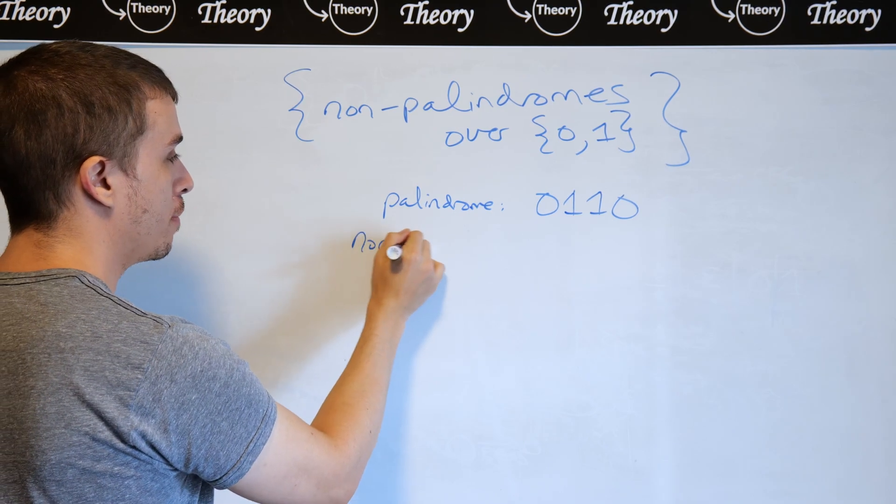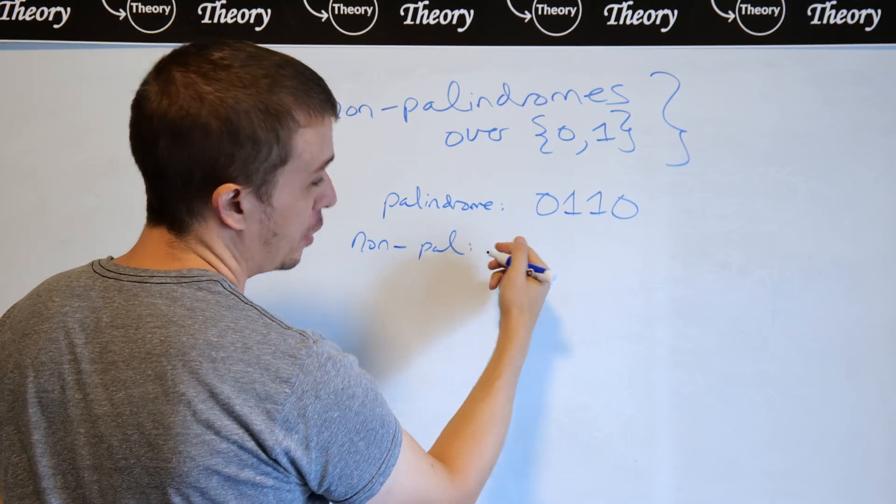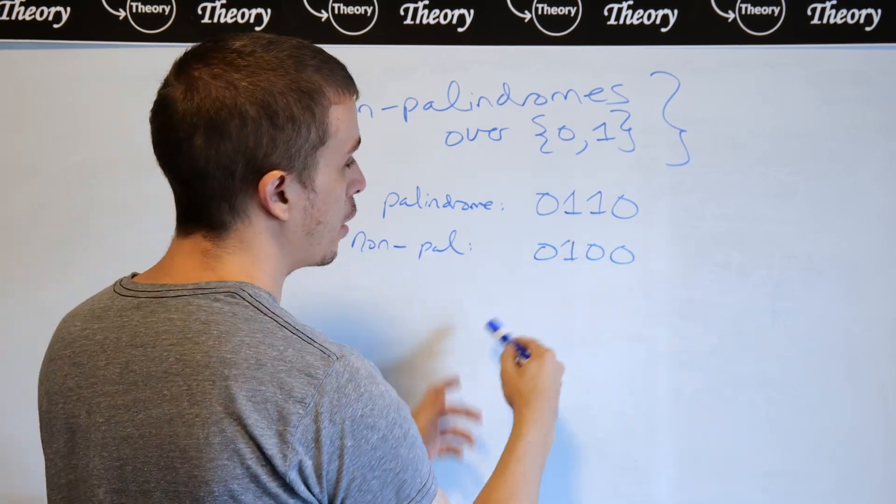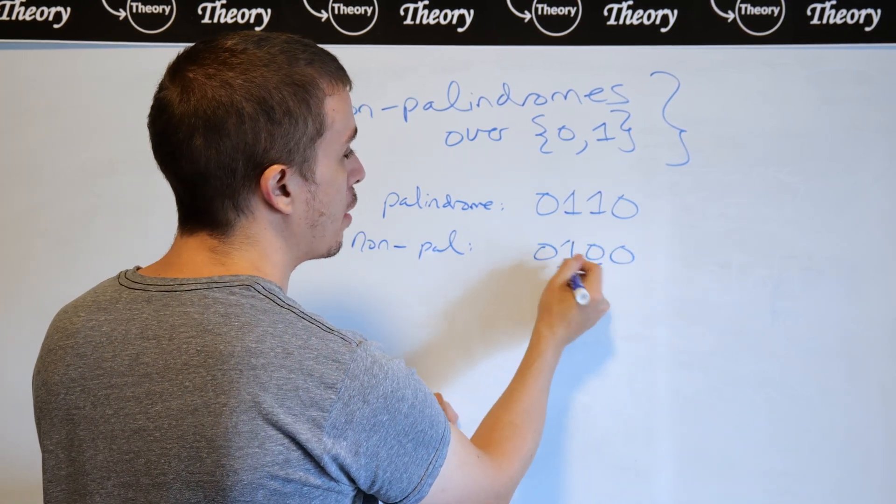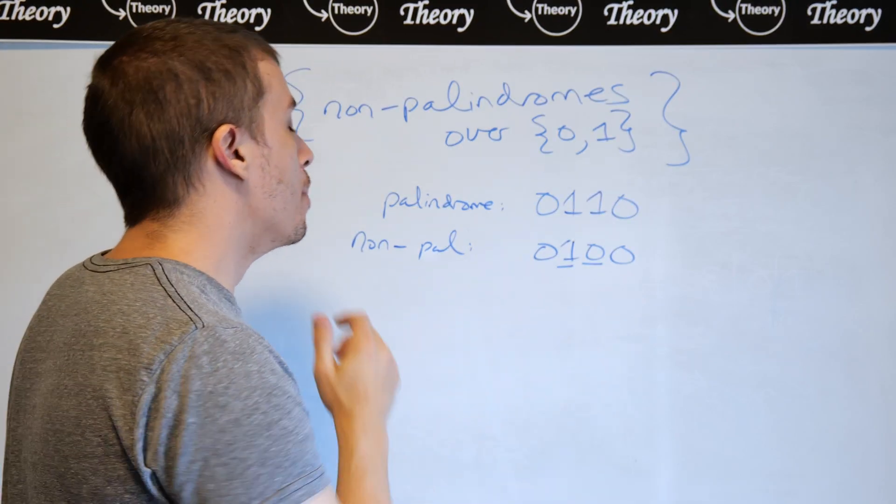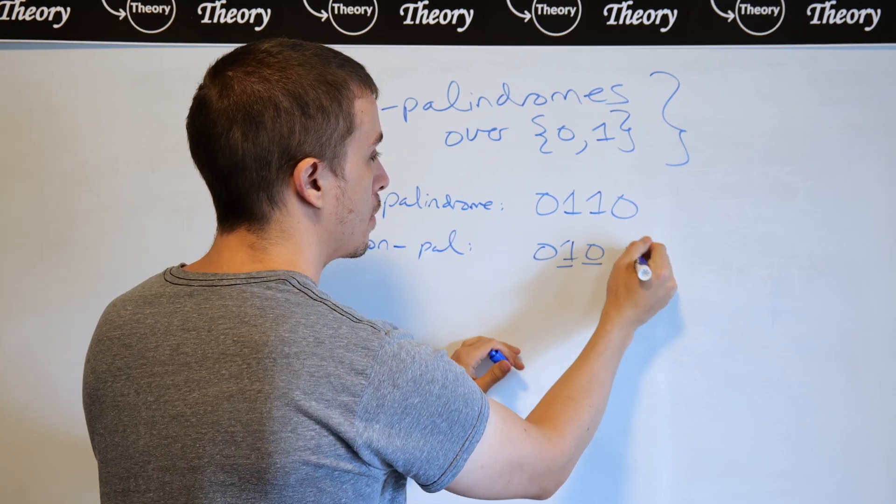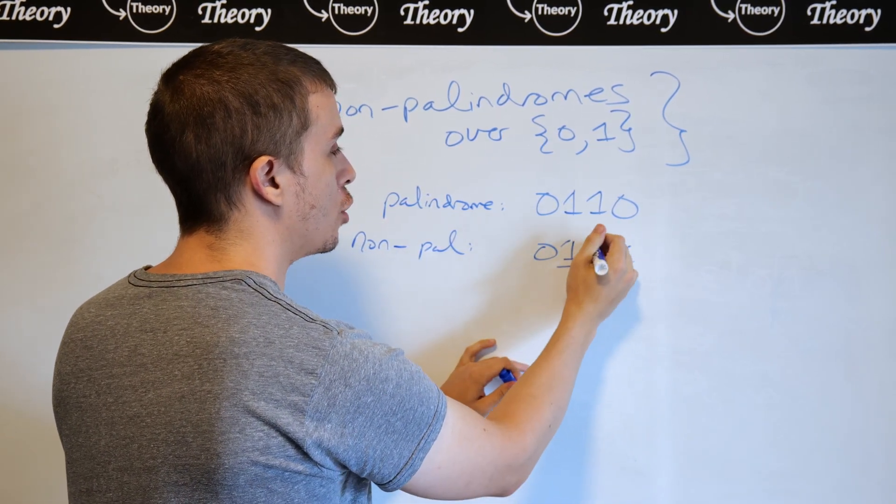In a non-palindrome, if we just change one of the characters, in fact you can change any of the characters here, so let's do 0, 1, 0, 0. Then clearly the badness is happening between the 1 and the 0 here. But it could also be that we have a 1 over here and that this character was a 1 here.